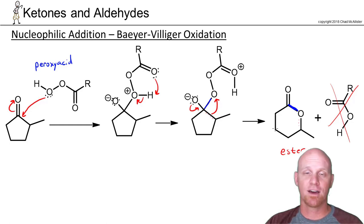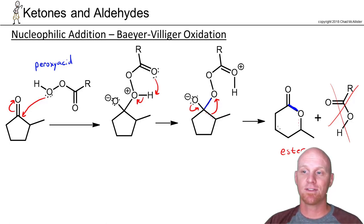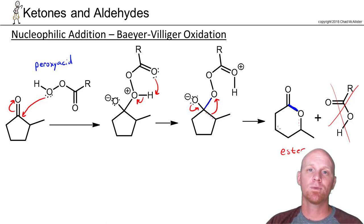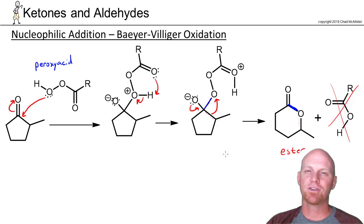That's the whole mechanism — this is your Baeyer-Villiger oxidation. The big key takeaway: ketones to esters, and technically aldehydes to carboxylic acids, although you're not as likely to see that one.